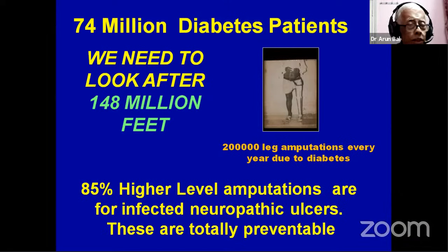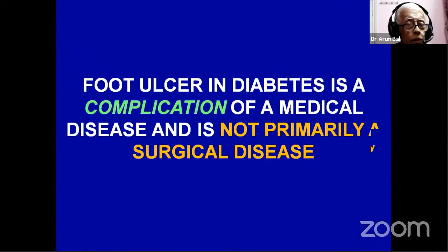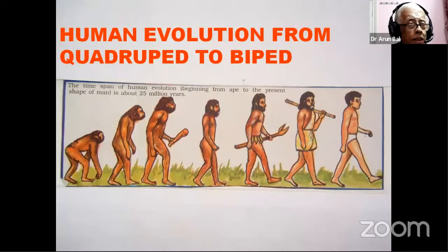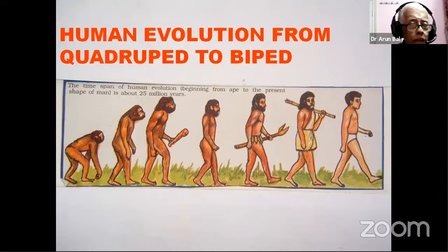The cost of prevention is not more than 1,000 or 1,500 rupees per year. We must understand that foot ulcer in diabetes is a complication of medical disease — it is not a primary surgical disease like hernia, hydrocele, or appendix. During evolution, when human beings became erect, two things happened: the eyes became distant from the feet and the nerves of the leg became longer.